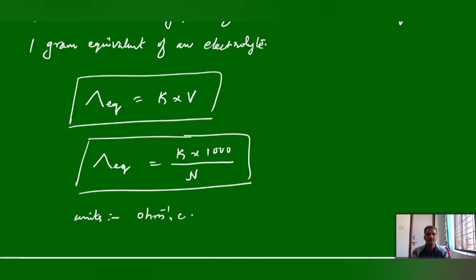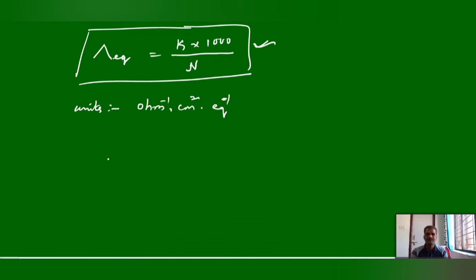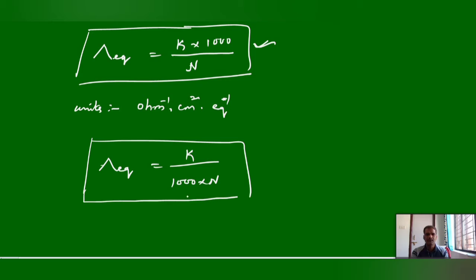In CGS units, equivalent conductance has units of ohm inverse centimeter squared equivalent inverse. In SI units, the formula changes to lambda EQ equals K by 1000 into normality, and the units become ohm inverse meter squared equivalent inverse. Use the appropriate formula depending on the units mentioned in the question.